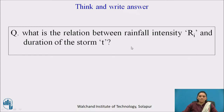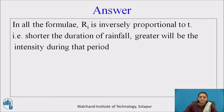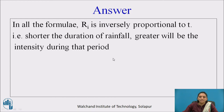Pause the video here and write the answer to this question: what is the relation between rainfall intensity and the duration of the storm? From the formulas, R_i is inversely proportional to T. That is, the shorter the duration of rainfall, the greater will be the intensity during that period.